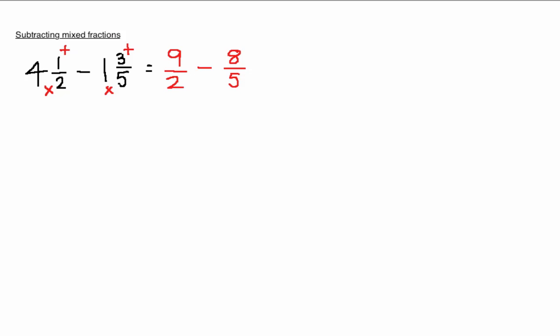Our second step is to consider what the lowest common multiple of 2 and 5 is. In this case, that number is 10. So we write down the denominators for both our fractions as tenths.